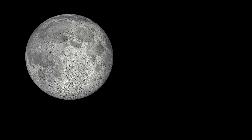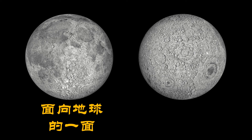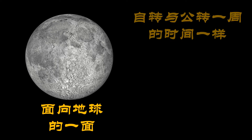平常看到的月球的表面是面向地球的一面。那背向我们、背向地球、我们从来都没办法看到的月球表面是长怎么样的呢？是长这个样子的，坑洞特别多，这一面是背向地球的一面。因为月球自转和公转一周的时间是一样长的，所以我们在地球只能够看见同一面的月球表面。(The side of the Moon we normally see faces Earth. The far side, which we can never see, has many more craters. Because the Moon's rotation and revolution take equal time, we always see the same face.)